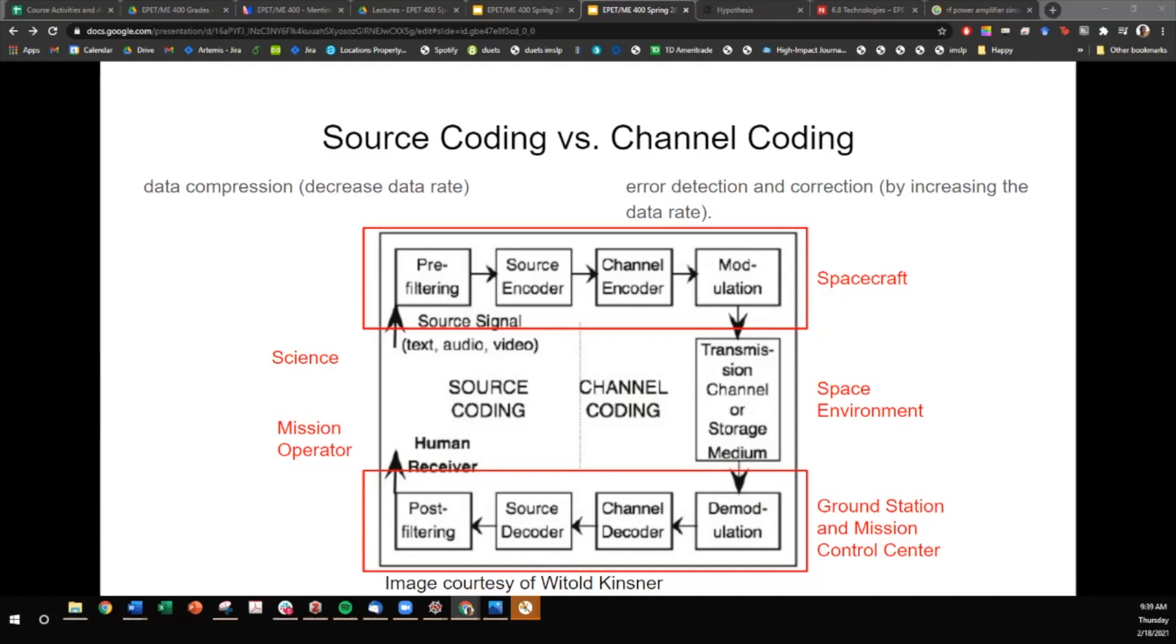Let's go through just the general flow of how data flows from the science to the mission operator. We'll start out with the science. The source signal can come in the form of imagery, video, audio, scientific data. And then that data is filtered. So noise goes out. This is just an example flow. And then there's some source encoding where an encoder is something that converts data. In this case, the source encoder converts a source signal into a smaller data format. And then we'll move on. We'll take that output, that smaller data packet size, and give it to the channel encoder.